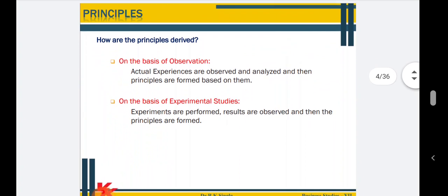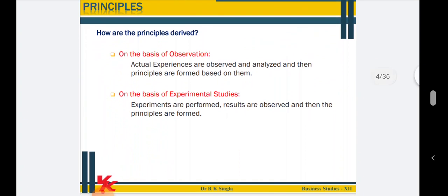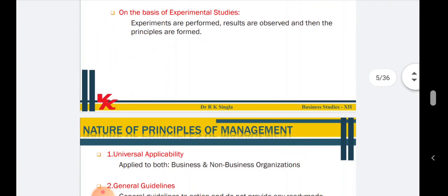Then how are the principles derived? Management principles are derived on the basis of observation — that is, actual experiences are observed and analyzed and then principles are formed based on them. Then on the basis of experimental studies — experiments are performed, results are observed, and then principles are formed. So these are the two methods: either on the basis of observation or on the basis of experimental studies.